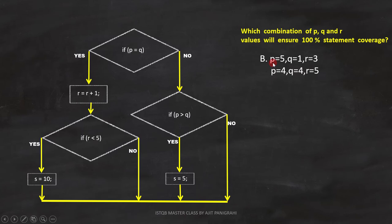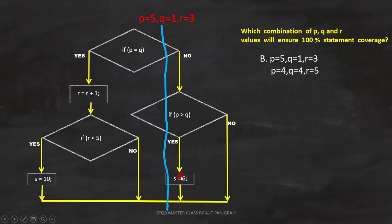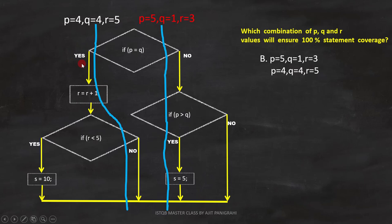Now we'll analyze Option B. First combination: p equals 5, q equals 1, r equals 3. Here p and q are not equal, so the first condition becomes false. And p is greater than q, so the second condition becomes true. Second combination: p equals 4, q equals 4, r equals 5. Here p and q are equal, so the first condition becomes true. And r is not less than 5, so the second condition fails. With Option B, we can only cover two statements out of three, so this is not the correct answer.